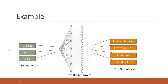Let's see an example of the MLP model. Here we are going to bring two inputs: the year the house was built and also the price of the house, to predict the house type.